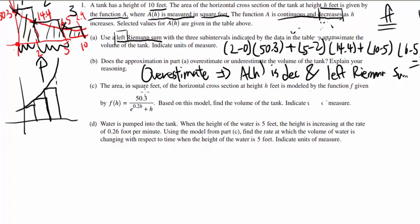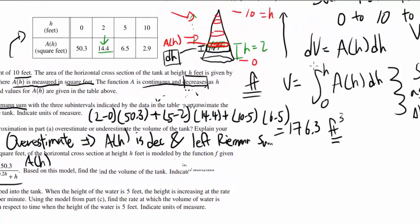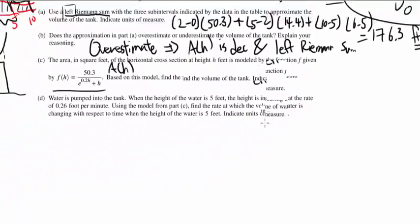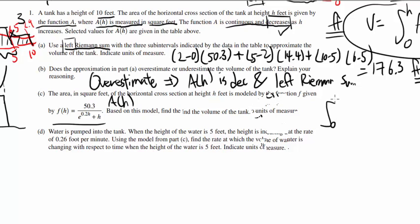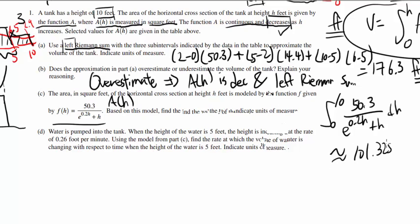Now let's look at Part C. The area of a cross-section at height h is given. So that's A of h, or F of h. Based on the model, find the volume of the tank. We already know how to find the volume of the tank. All we have to do is go from 0 to 10 of F of h, which is 50.3 over e to 0.2h plus h, dh, and plugging that into your calculator should get you 101.325 cubic feet. Make sure you round to the thousands.